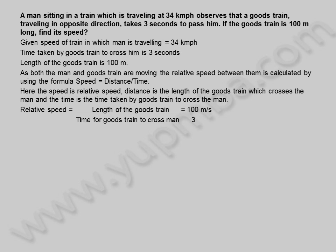Relative speed is equal to length of the goods train divided by time for goods train to cross man, which is equal to 100 by 3 meters per second.